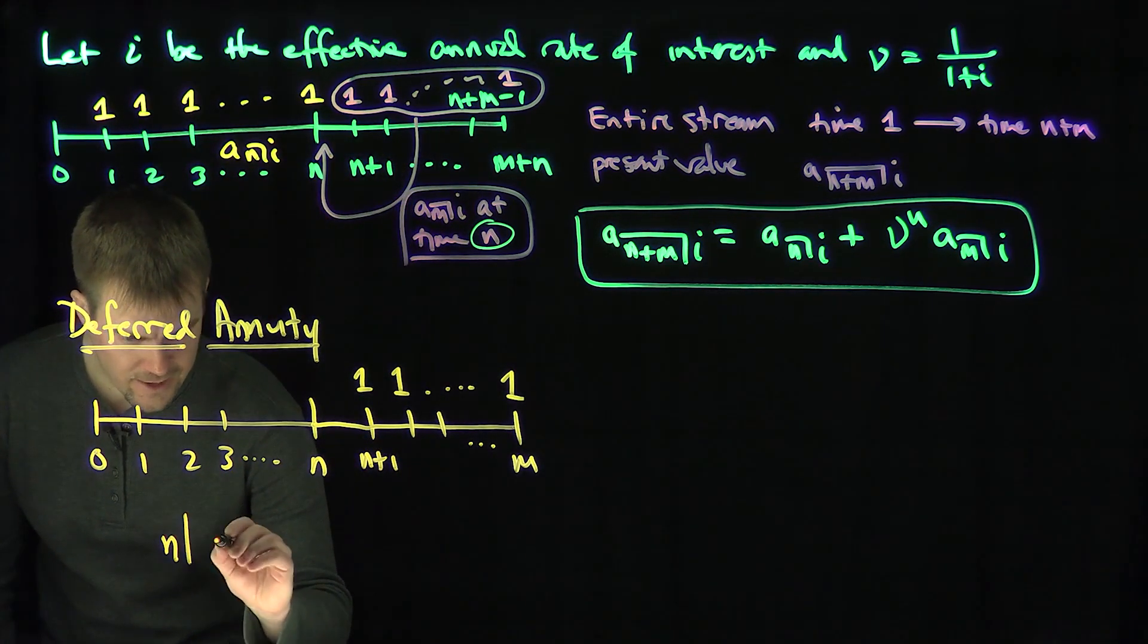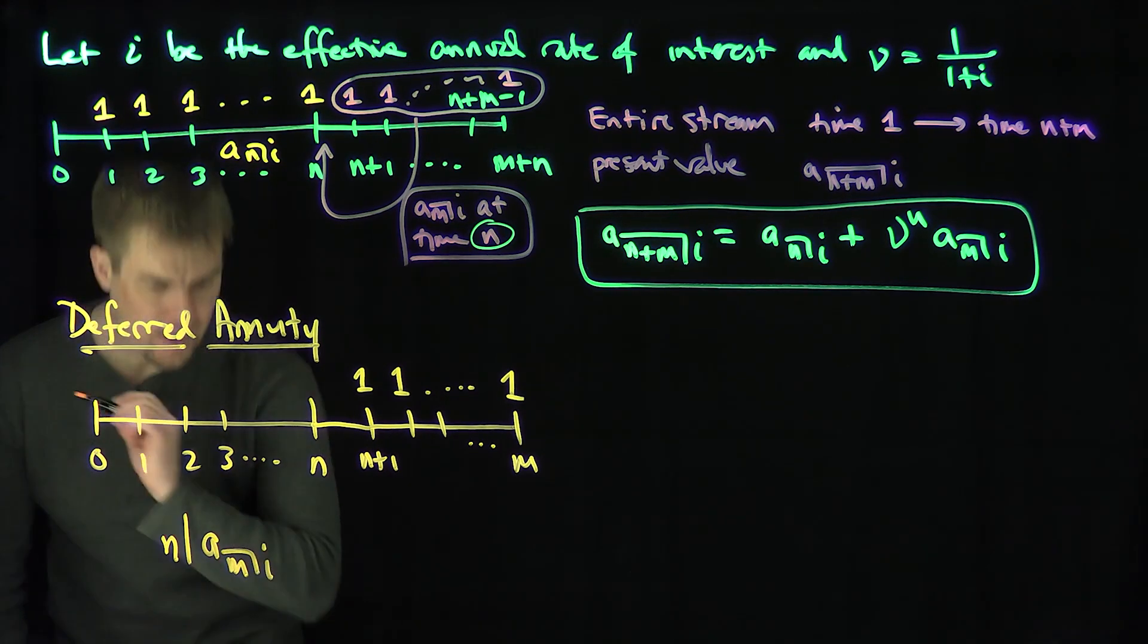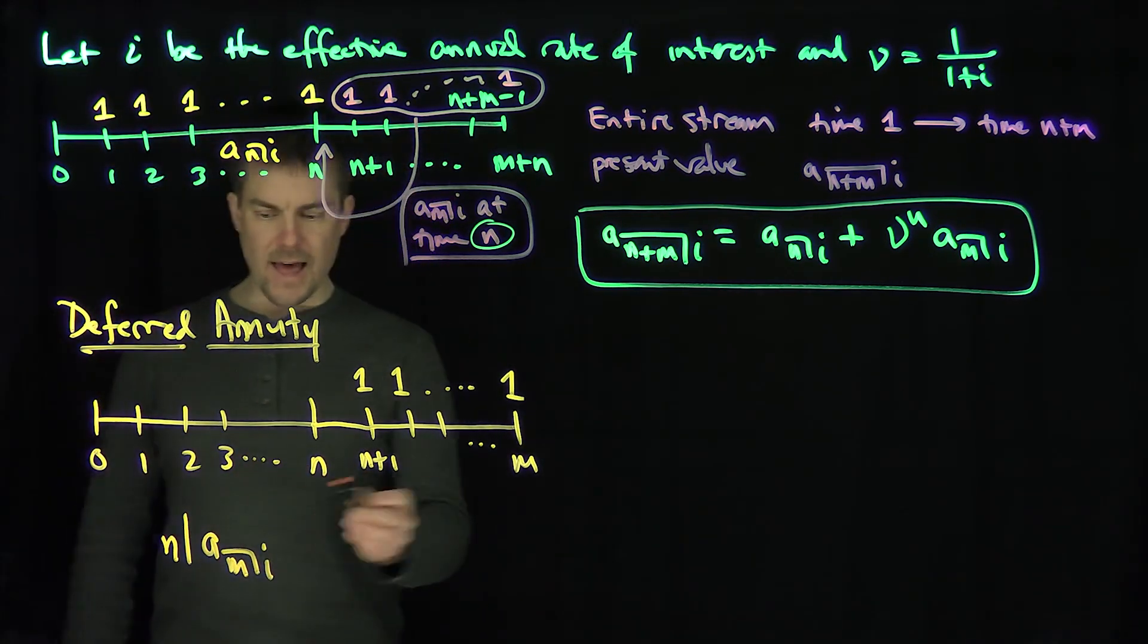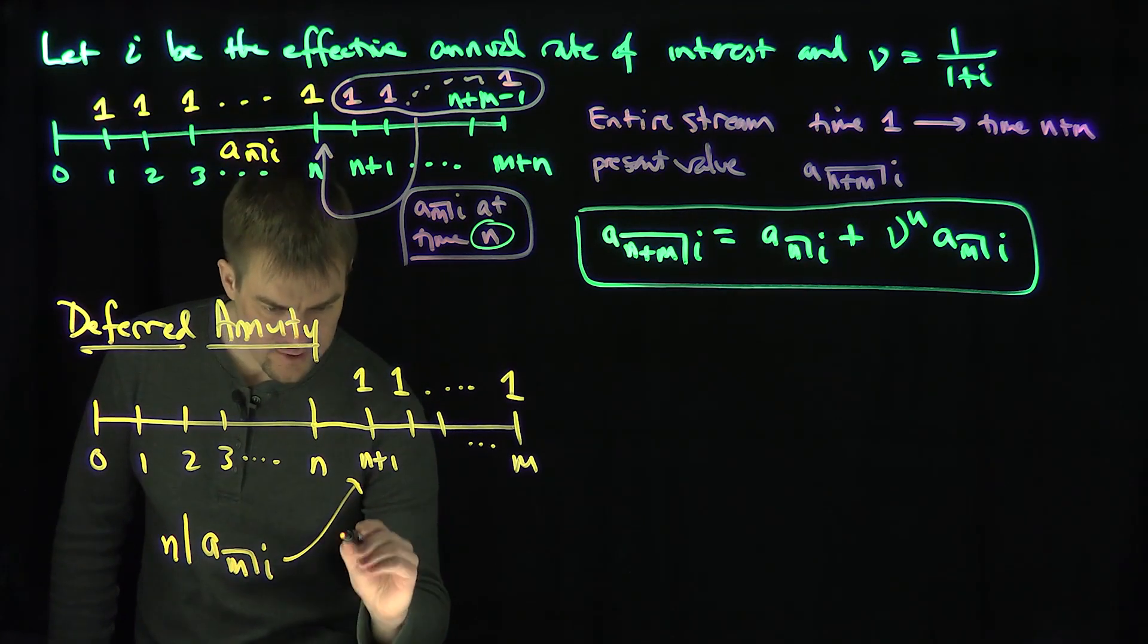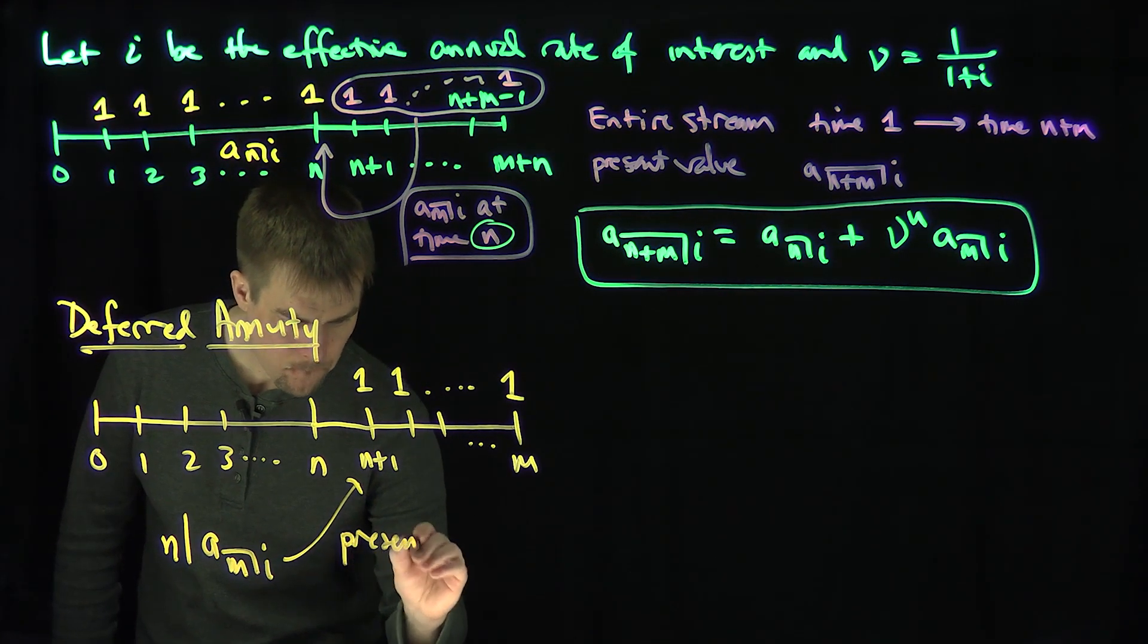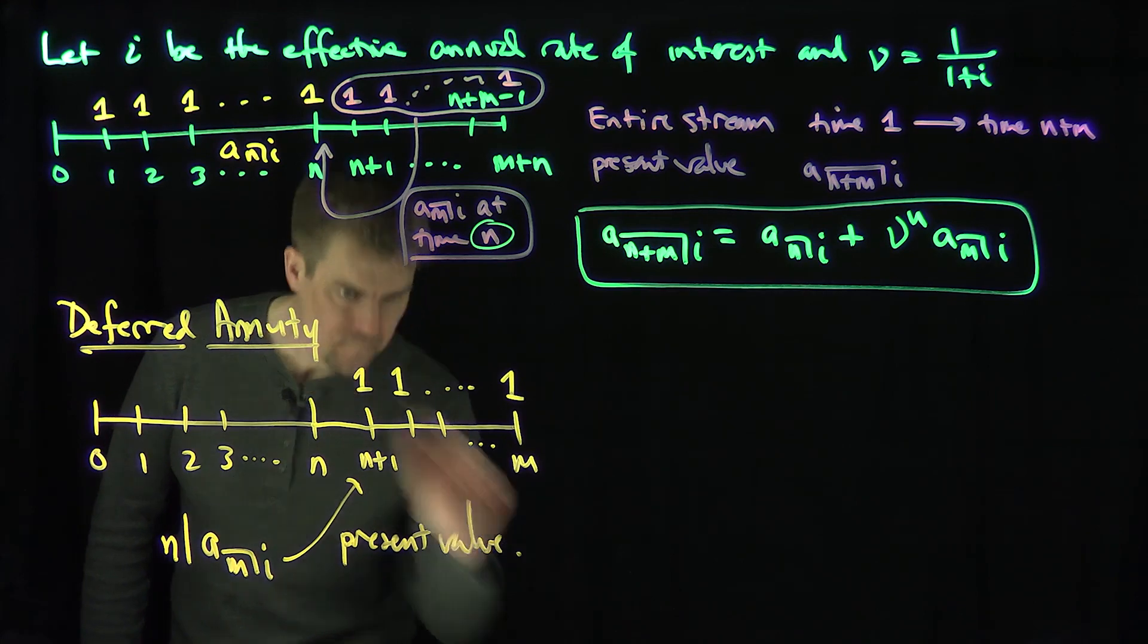We're going to use this notation: I'm going to defer n years, an annuity a_m,i. That will represent the present value of this stream.